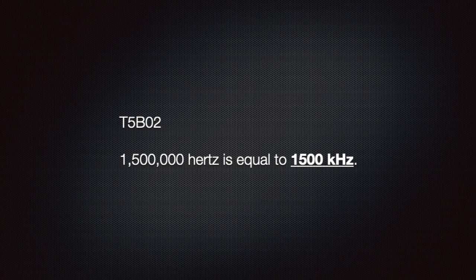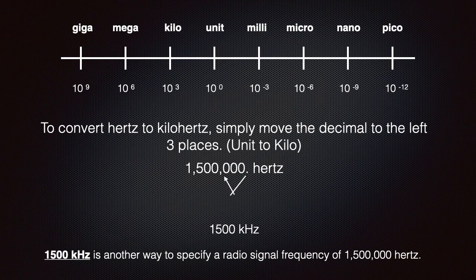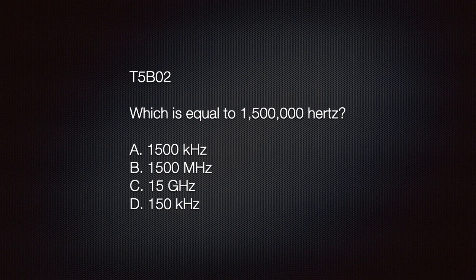We should know that 1,500,000 hertz is equal to 1500 kilohertz. To convert hertz to kilohertz, simply move the decimal to the left three places. The exam question looks like this: which is equal to 1,500,000 hertz? A) 1500 kilohertz, B) 1500 megahertz, C) 15 gigahertz, or D) 150 kilohertz. The correct answer is A, 1500 kilohertz.